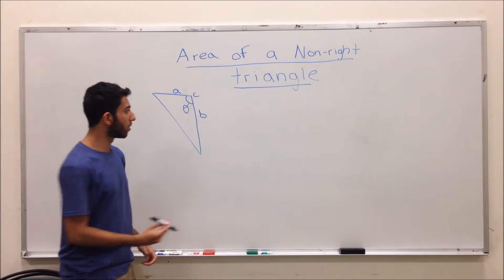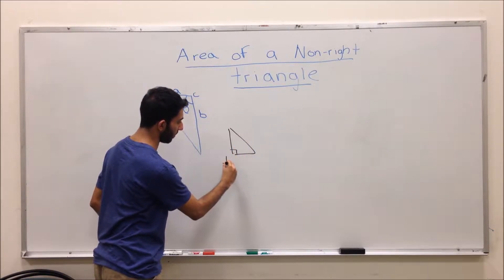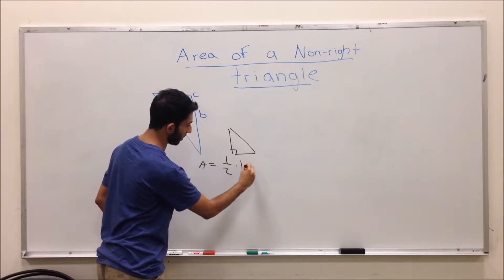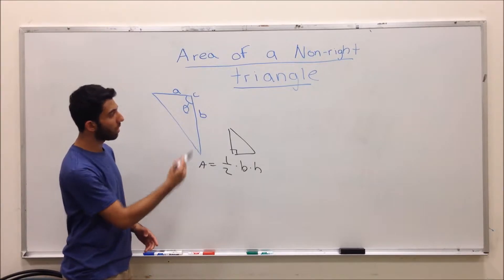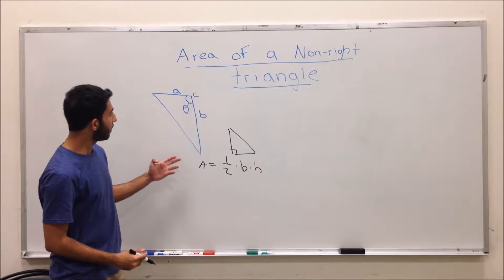When doing the area of a right triangle, the formula that is often used is one-half base times height. But in cases when you have a non-right triangle, then you have to use a completely different formula.